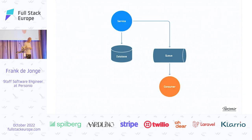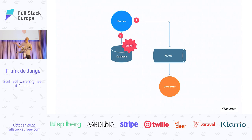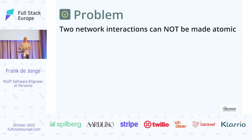To dig a little bit deeper: what usually happens is people have a service of some kind that needs to store stuff into the database but also produce an event. If we can't persist to the database, we generally say this has gone pear-shaped — we opt out, no message is delivered to the consumer, and that's usually fine. But what if the second request fails? We do store something in the database, but we don't send it to the queue. This problem is caused by the fact that there are two network interactions here, and two network interactions cannot be made consistent or atomic.